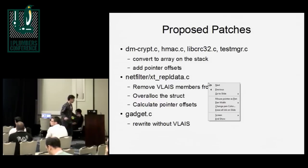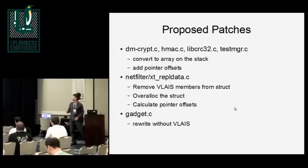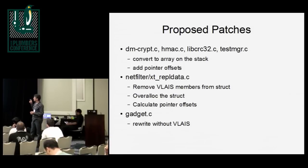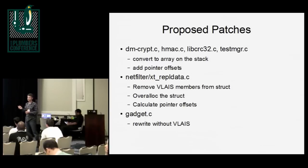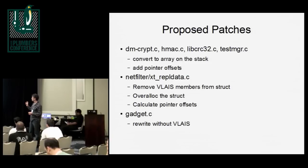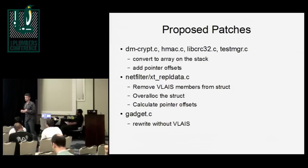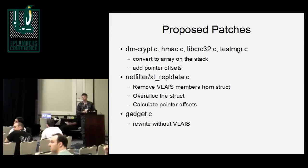The proposed patches are for dmcrypt, HMAC, libcrc32, and testmanager.c. These are being allocated on the stack, so we want to continue to do that. We just convert the structure to a character array and then calculate the pointer offsets within the array for the other members - there are just two structure members, so that was fairly simple. For the netfilter stuff, we removed the VLACE members from the struct, then did a malloc of a larger area of memory and allocated the pointer offsets. For the gadget driver, they just said they don't care about keeping these things inside the struct, and we just removed them. Where we would typically just do a free of the structure, we had to free all of the separate individual parts.